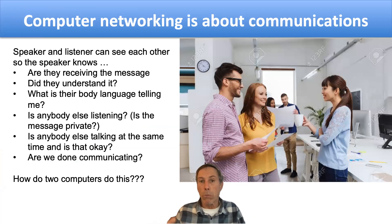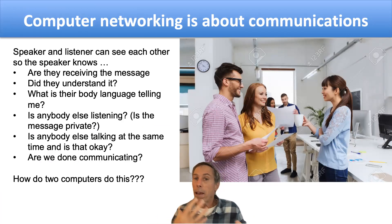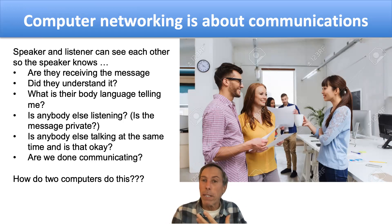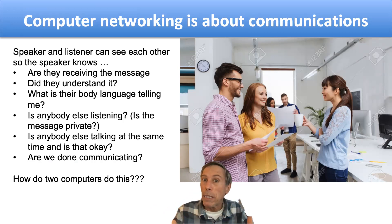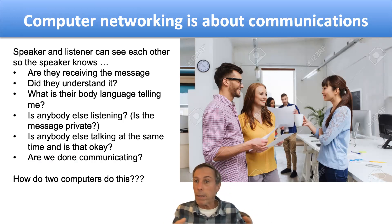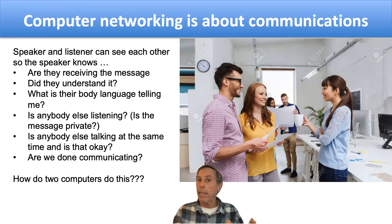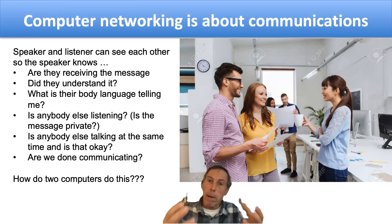A lot of this has its roots in human communications and how we communicate. When we communicate face to face, we can see if somebody is receiving the message — do they understand it? What is their body language telling us? Is somebody else listening who maybe we don't want to hear? Are they understanding the message? Are we done communicating? Well, two computers have to figure all that out as well, but they don't see each other. So we'll learn about the rules — the protocols — that computers use to do this.